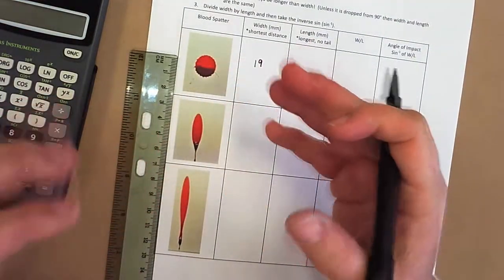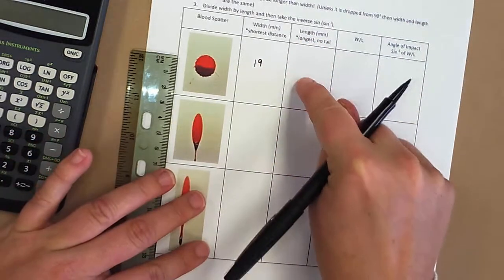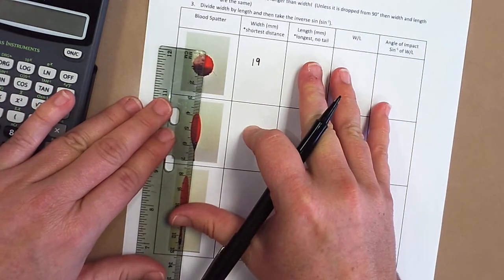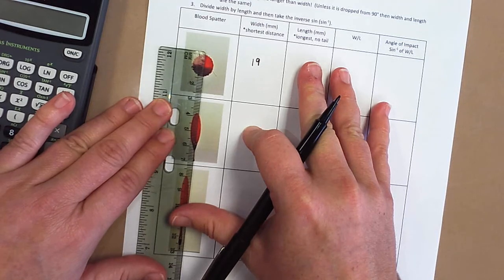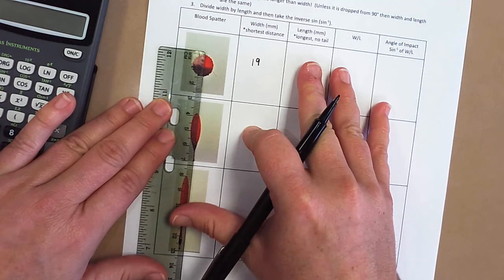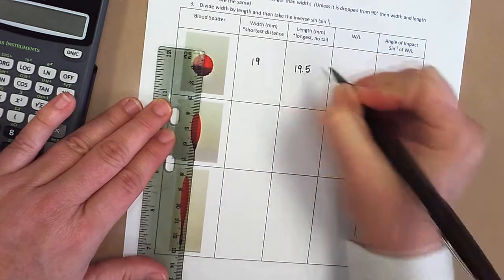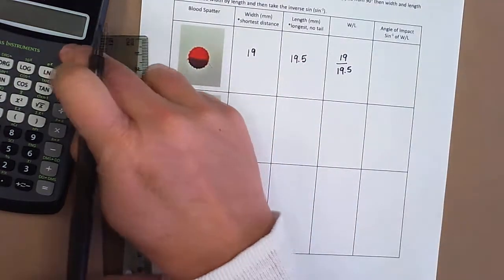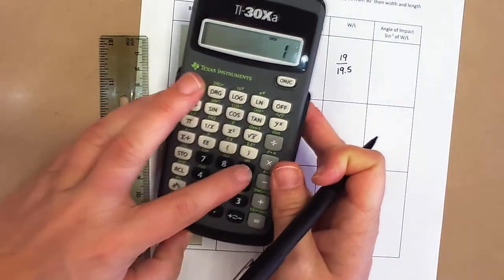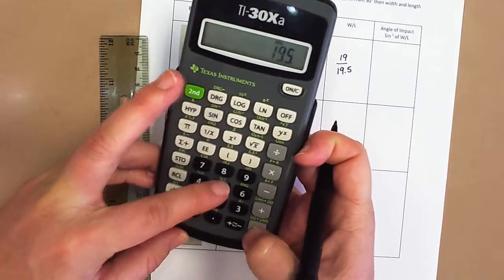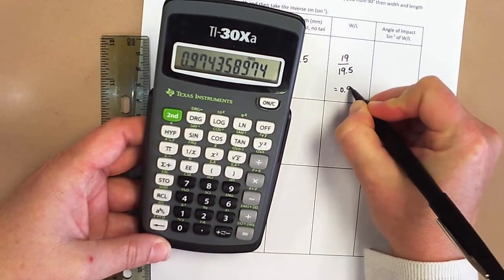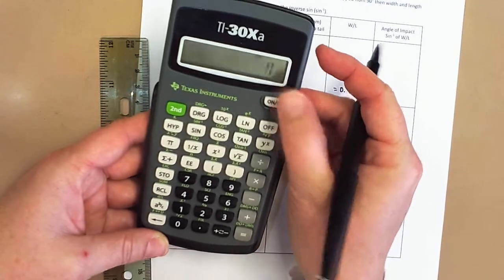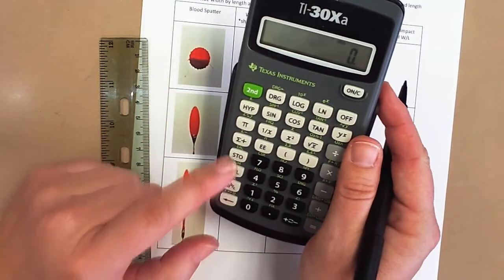You can see it's not quite to that two mark there. So I'm going to go ahead and write down 19, and then I'm going to measure the length. Now this blood droplet looks like it was almost dropped from straight up and down, so I wouldn't be surprised if this number is not much larger than 19. If I take a look, I really have about 19. It almost looks like another 19 but it's a little bit bigger, so I'm going to estimate it at 19.5. The next thing I'm going to do is I'm going to take my width divided by my length. If I do that on my calculator, I have 19 divided by 19.5, and that gives me 0.97.